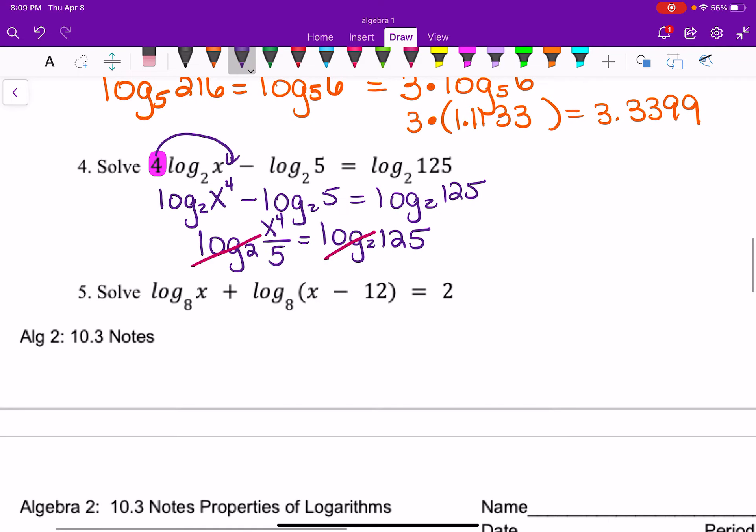And now we have just an algebraic problem, a basic algebraic. x to the 4th over 5 equals 125. So we solve that by multiplying both sides by 5. So we have x to the 4th equals 625. I hope you remember the opposite of the 4th. We're going to, equals 5.